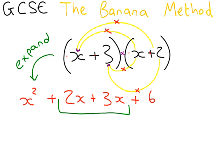2x add 3x is 5x. So, all together for your final answer you have x squared plus 5x plus 6.